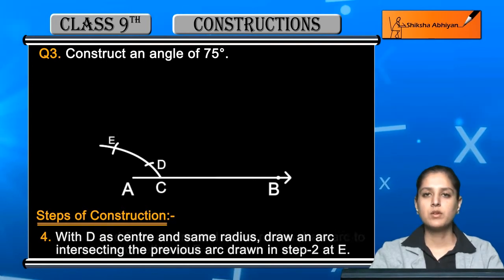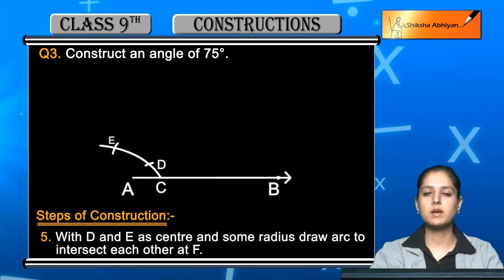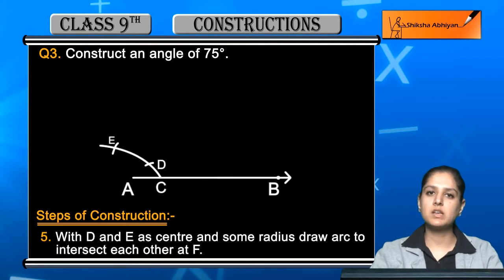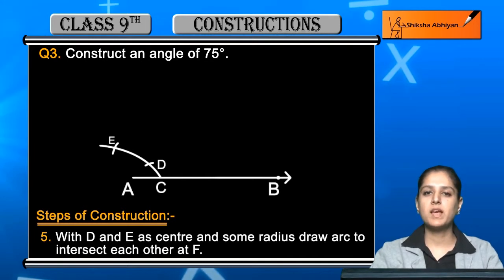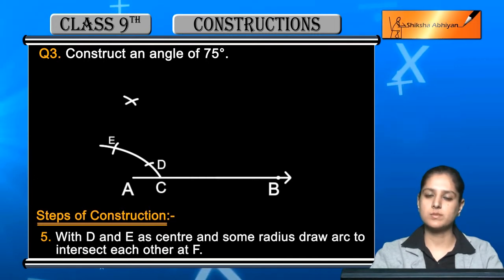Next step is, with D and E as centers and some radius, draw arcs to intersect each other at point F. Now you have to take D and E to center and open convenient radius and draw two arcs which will intersect each other at point F. First, open compass and keep D point on your compass and draw one arc. Then, E point on the compass, you have to intersect each other at point F.